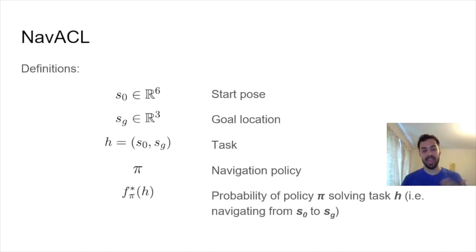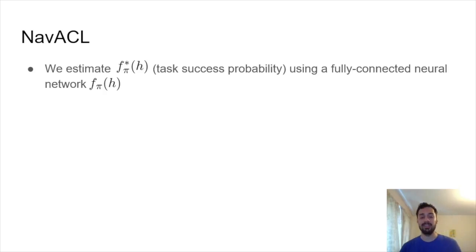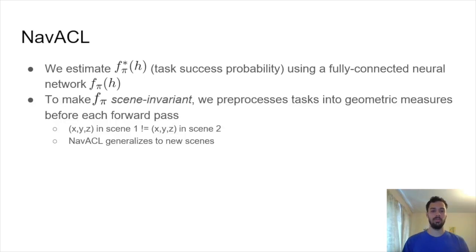We'll start with a couple of definitions. We have S0, this is the start pose of our agent. SG is the location that our agent is trying to navigate to. A start and a goal compose a task H. We're training navigation policy π. And we have f_π*(H), and this is simply the probability of our policy π solving a specific task H. So how likely is it that our policy can navigate from S0 to SG? We estimate f_π*, the task success probability, using a fully-connected neural network we call f_π. To make f_π scene-invariant, we take our tasks H and pre-process them into geometric measures before each forward pass. This is simply because some coordinate (x,y,z) in scene 1 bears no correspondence to a coordinate (x,y,z) in scene 2. So this allows NAVACL to generalize across scenes and even to new scenes that it has not seen before.